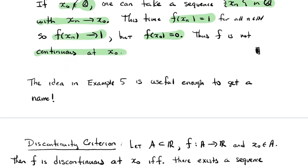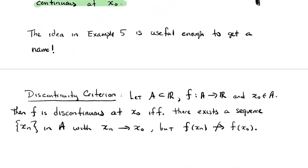The technique used in that proof is useful enough to give its own name: the discontinuity criterion. A function f on A is discontinuous at x₀ if and only if there exists a sequence in A converging to x₀ such that the image sequence does not converge to f(x₀). In both cases above, I found a sequence converging to x₀ whose image sequence converged to the wrong value.